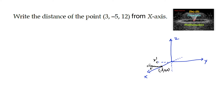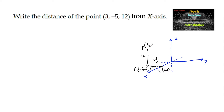So this is 5 units here, and we can say here 3, minus 5, 0. And then 12 units along the z-axis — positive z-axis — so this is 12 units. So here is the point 3, minus 5, 12.